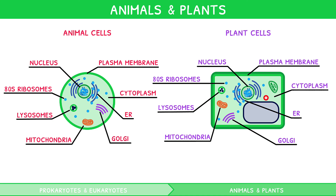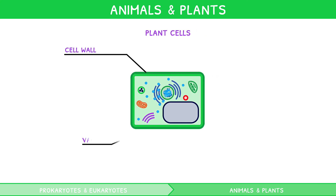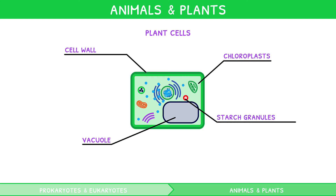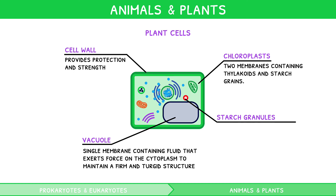However, plant cells contain four additional structures you need to know: a cell wall, a vacuole, chloroplasts, and starch granules. The cell wall provides protection and strength. The vacuole is a single membrane containing fluid that exerts force on the cytoplasm to maintain a firm and turgid structure. Chloroplasts are two membranes containing thylakoids and starch grains, and they carry out the process of photosynthesis. Starch granules are stores of carbohydrate in the form of starch.